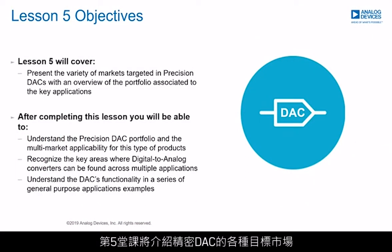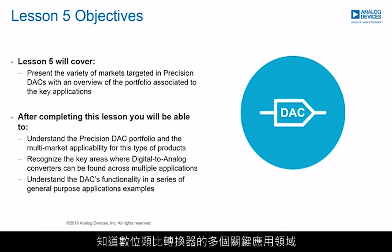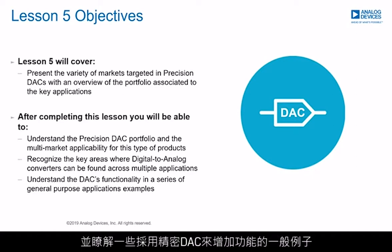Lesson 5 will present a variety of markets targeted in precision DACs, with an overview of the portfolio associated to the key applications. The objective of this lesson is to obtain a general overview of the precision DAC portfolio and its applicability in multiple markets, recognize the key areas where digital-to-analog converters can be found across multiple applications, and understand general proposed examples where precision DAC adds functionality.